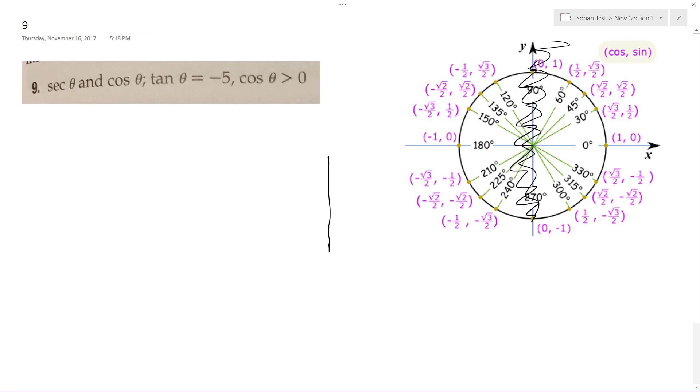So that means that opposite over adjacent is negative five over one, and that means the hypotenuse is going to be equal to root 26.